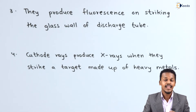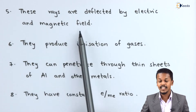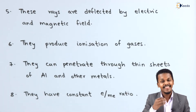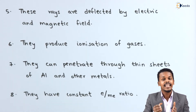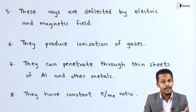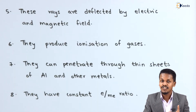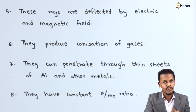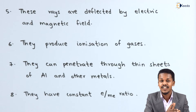Cathode rays are deflected by electric as well as magnetic fields. The reason is that cathode rays are made up of electrons, which carry a negative charge. Therefore, electrons will be attracted towards the positively charged plate or deflected away from the negatively charged plate, showing the influence of electric and magnetic fields on these particles.